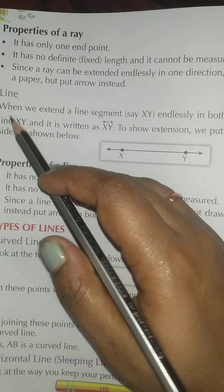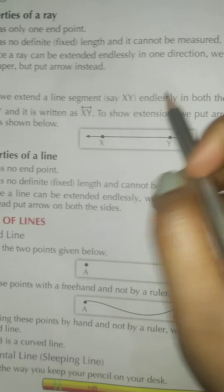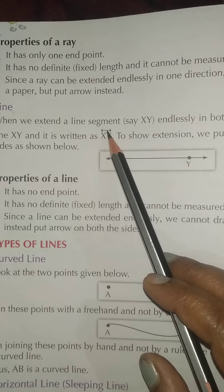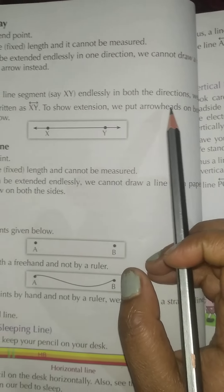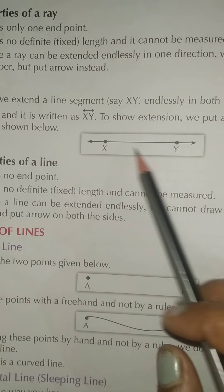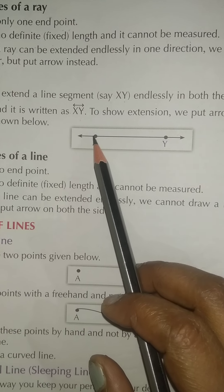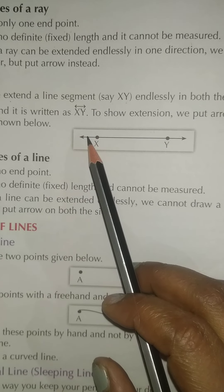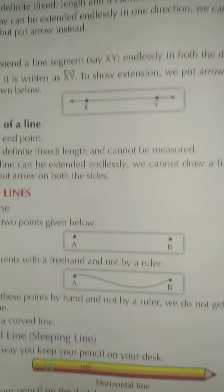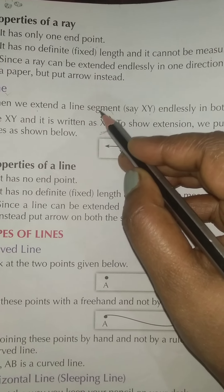Now let us start the next topic — that is Line. When we extend a line segment, say XY, endlessly in both directions, we get line XY, and it is written as XY with a line symbol. To show extension, we put arrow heads on both sides as shown. So two points X and Y are given, a line segment is drawn, and then both sides are extended — this is called a line.